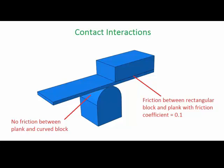This means that we will first create two interaction properties, frictional and frictionless, just like we did in the contact pairs tutorial. However, we will apply them a little differently.